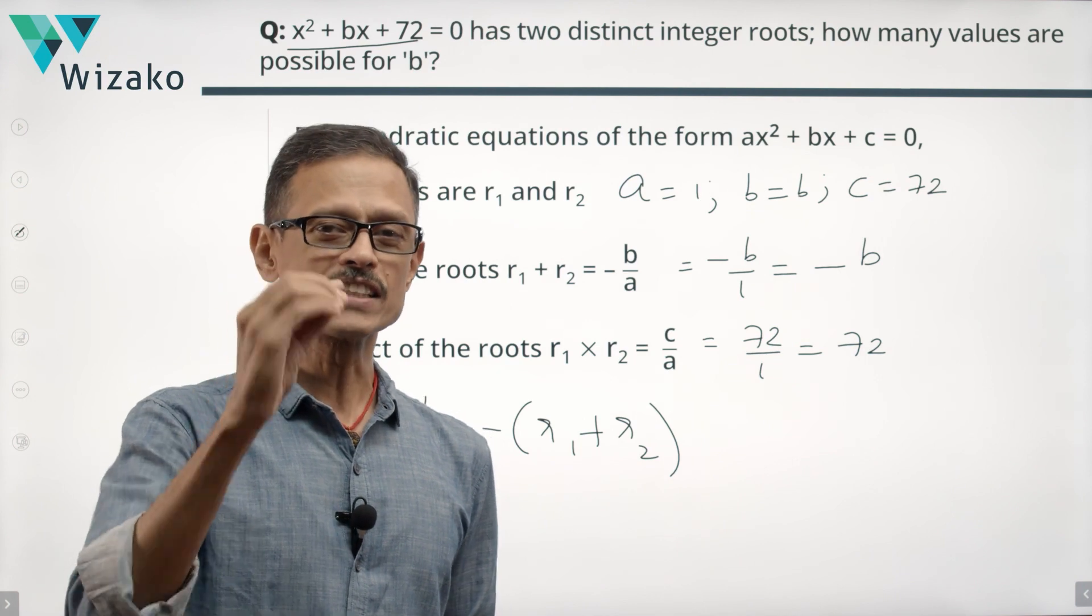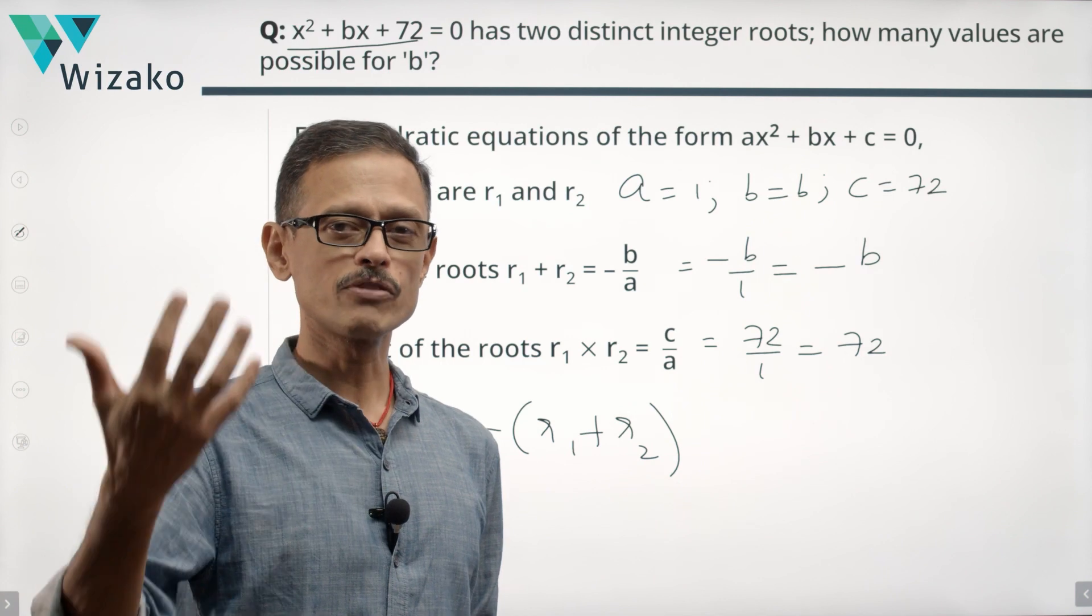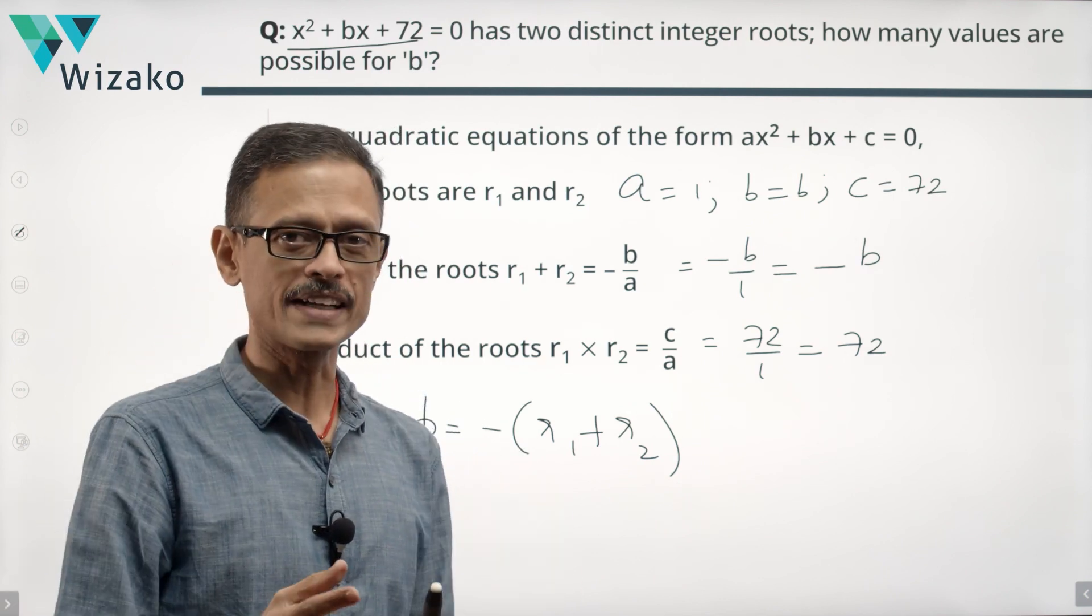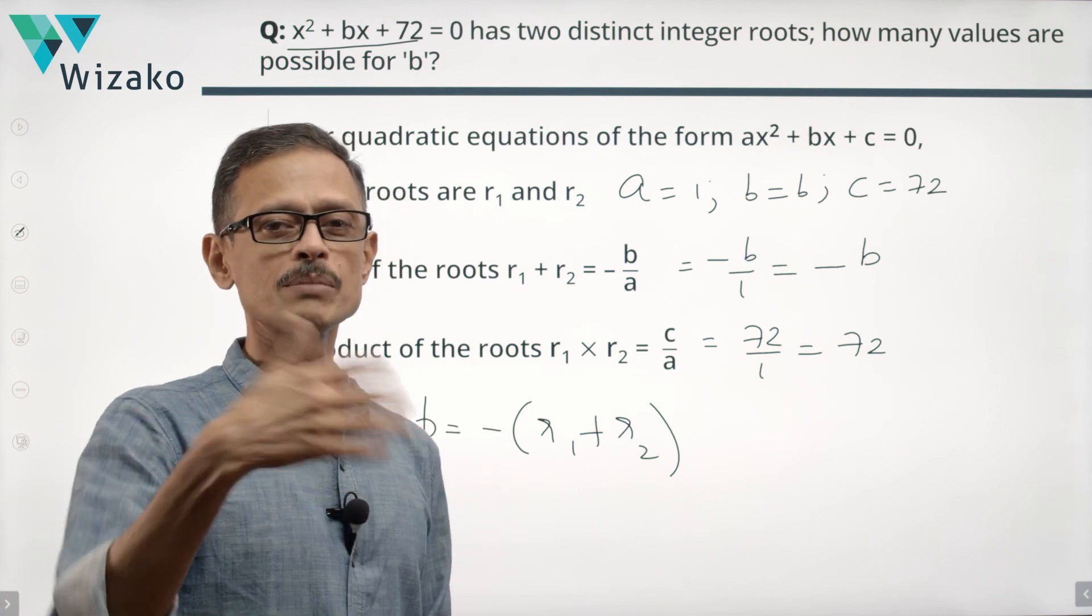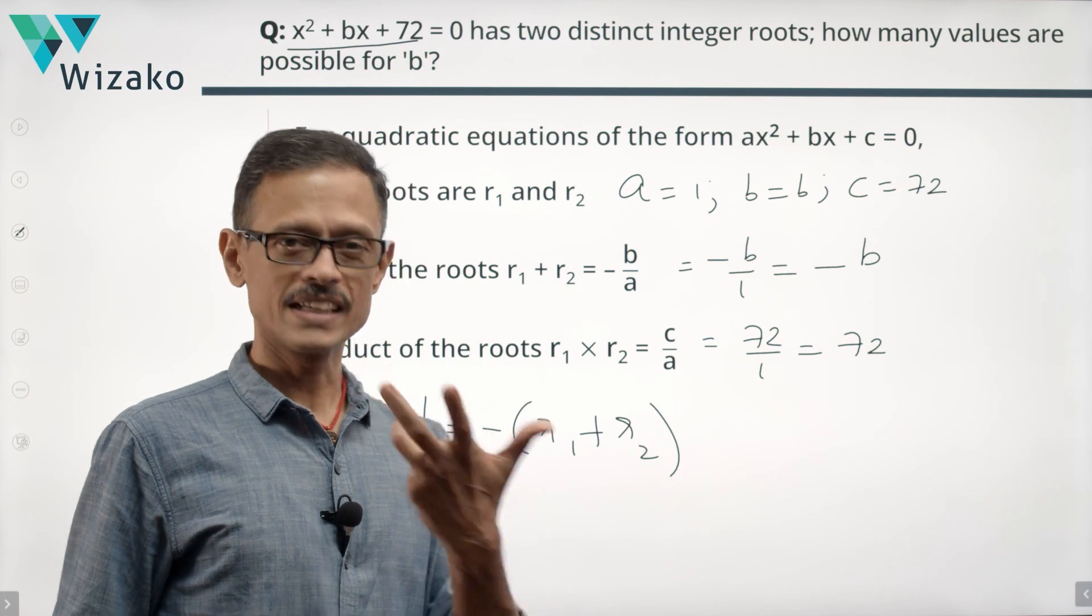So we need to determine what are all the possible values R1 plus R2 can take. So in a way, a step before that is, if we can determine the different values that R1 and R2 can take, then we'll be able to determine the number of values R1 plus R2 can take. Do we know values that R1 and R2 can take? Yes, in a way.